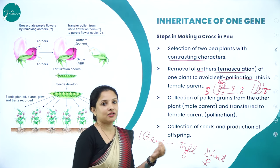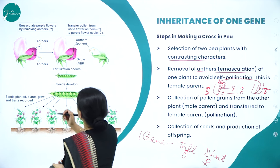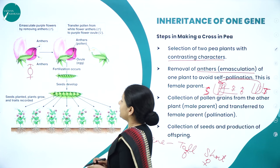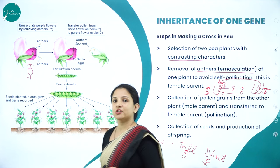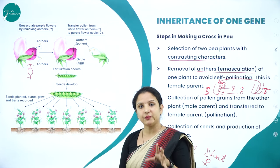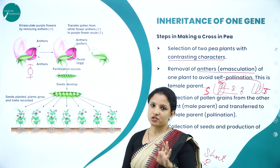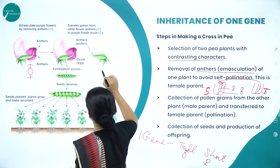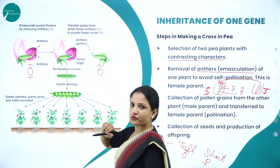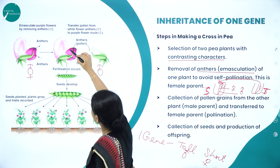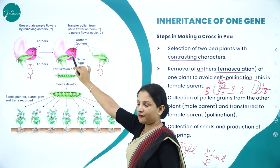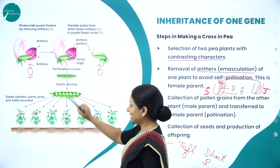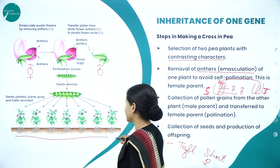He collected the pollen grains from the tall male parent and transferred them onto the stigma of the female parent for pollination. Fertilization occurred — the male gamete fused with the egg — and seeds developed. He collected those seeds and sowed them in the soil. Now we will see what results he got from this experiment.